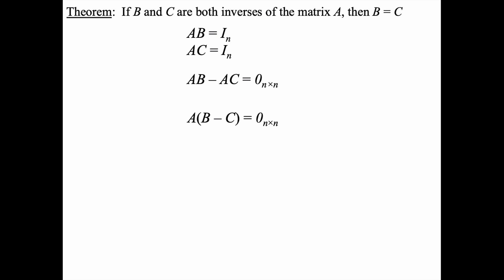Now here students are understandably cautious because they know that just because those two matrices multiply to give you the zero matrix does not mean or guarantee that either or both of them have to be the zero matrix. However in this particular case we can establish that B minus C has to be the zero matrix.